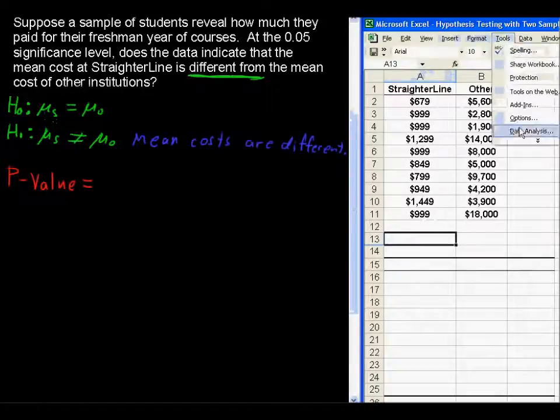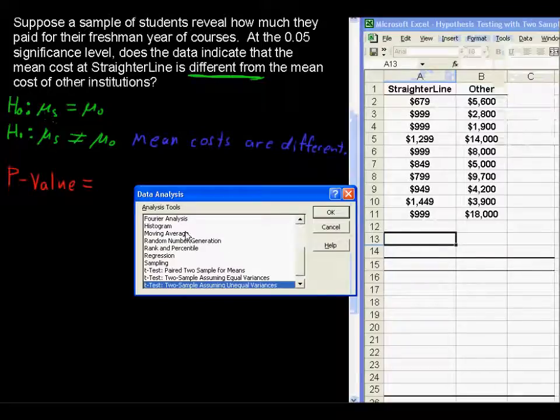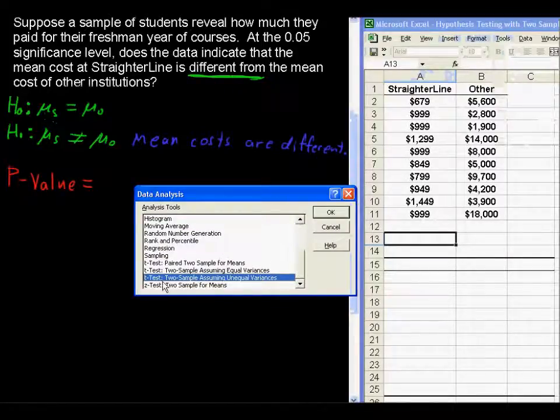Then tools, data analysis. We've got all these different tools. We're going to choose from this list of hypothesis testing. We're going to do a t-test two-sample assuming unequal variances, meaning we're not sure. In fact, it's probably not the case that these two data sets have the same variances.